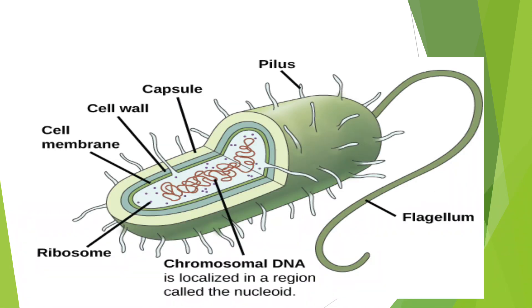This is the diagram for the prokaryotes. It has pilus, capsule, cell wall, cell membrane or plasma membrane, ribosomes and DNA in the center of a cell with a single flagellum.